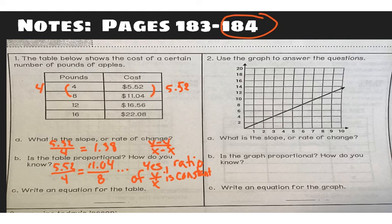Write an equation for the table. We know that y equals the slope, which is 1.38. That's what we found in A. Y equals the slope times x. That's how, if something is, if an equation is proportional, this is how we would write it. Y equals the slope times the letter x.